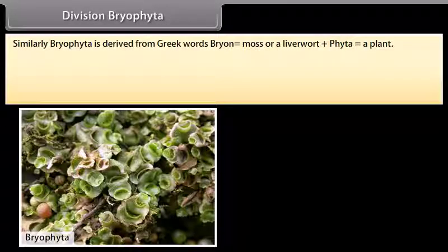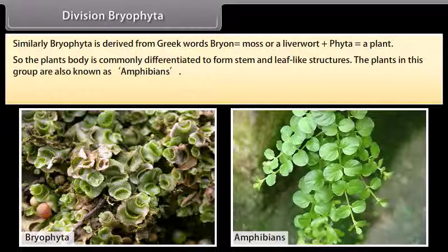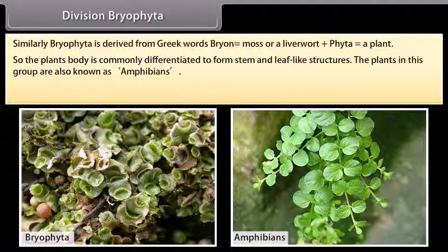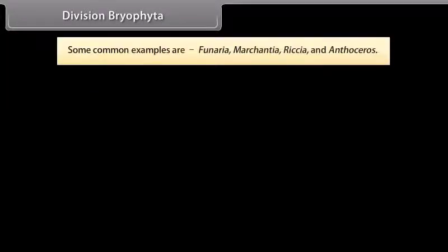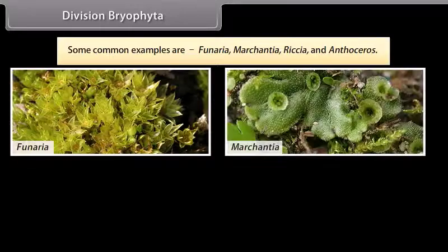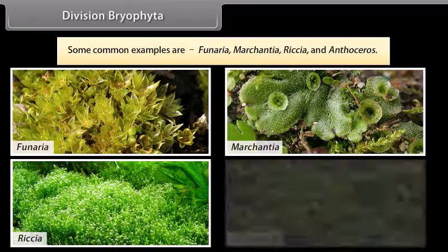Division Bryophyta: Bryophyta is derived from Greek words 'bryon' meaning moss or a liverwort, plus 'phyta' meaning a plant. The plant bodies are commonly differentiated to form stem and leaf-like structures. The plants in this group are also known as amphibians of the plant kingdom. There are no specialized tissues to conduct water and minerals. Some common examples are Funaria, Marchantia, Riccia and Anthoceros.